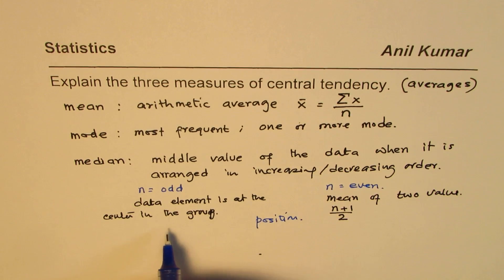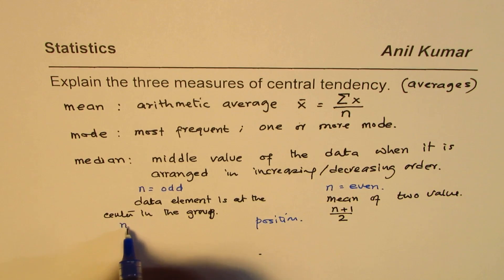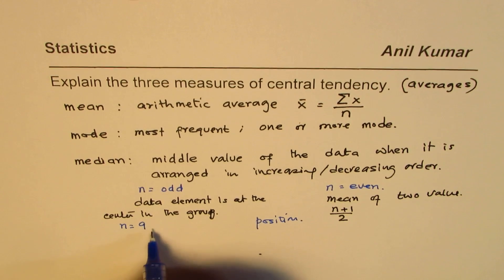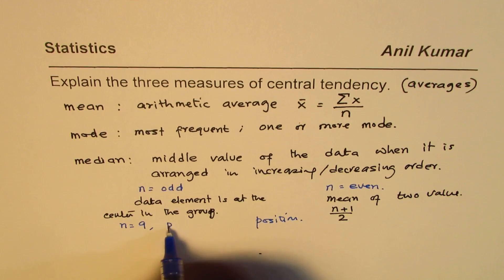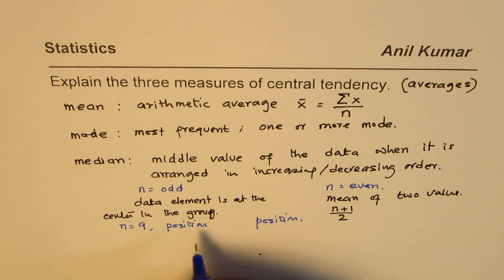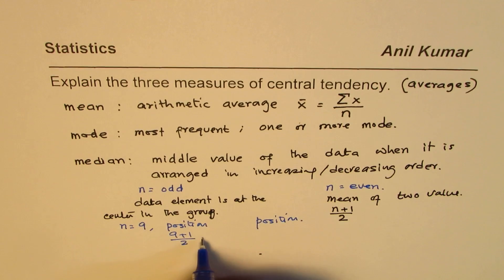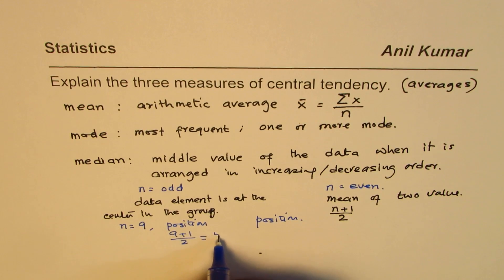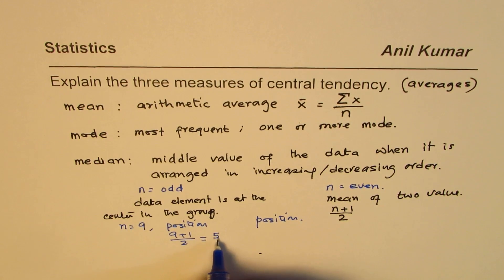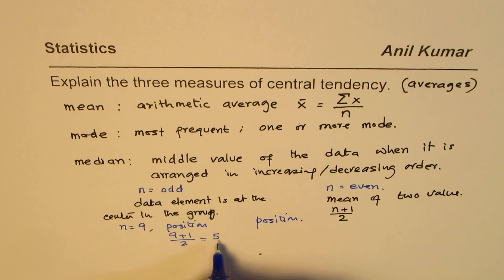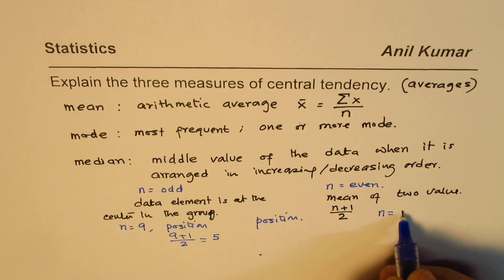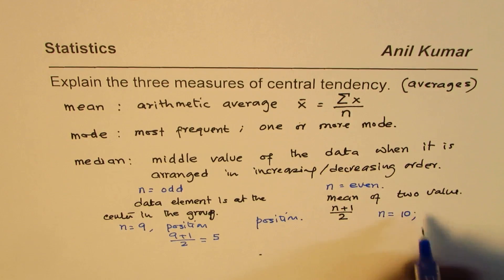Let's say if we have nine elements, if n equals 9, in that case the position for median will be 9+1 divided by 2, which is 10 divided by 2 equals 5. So the fifth position element will be the median.